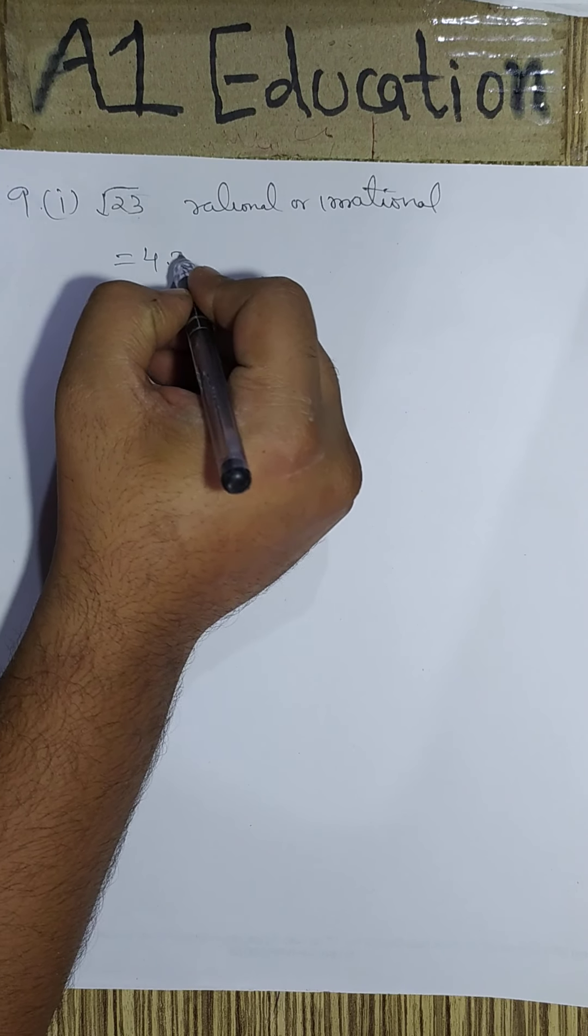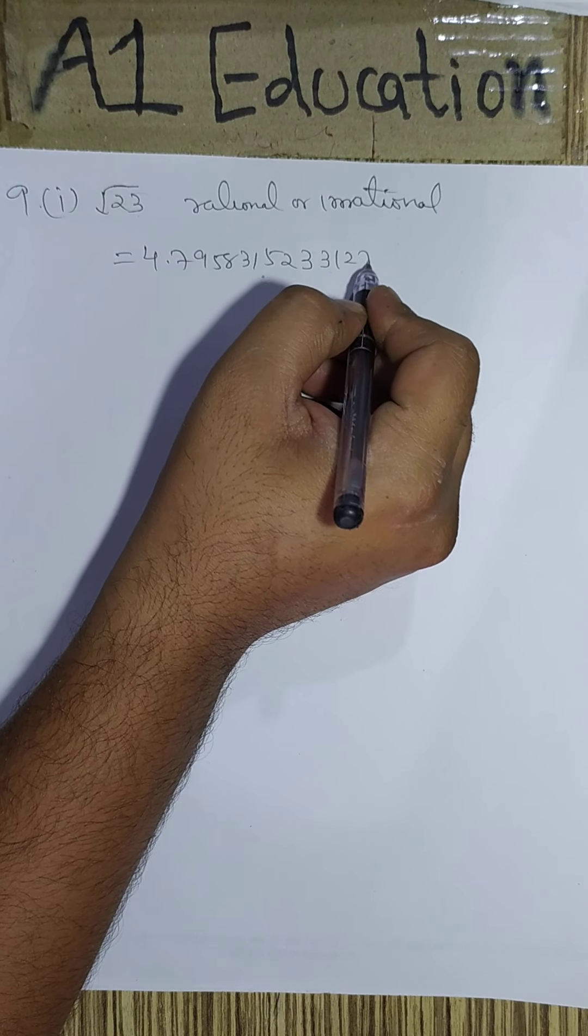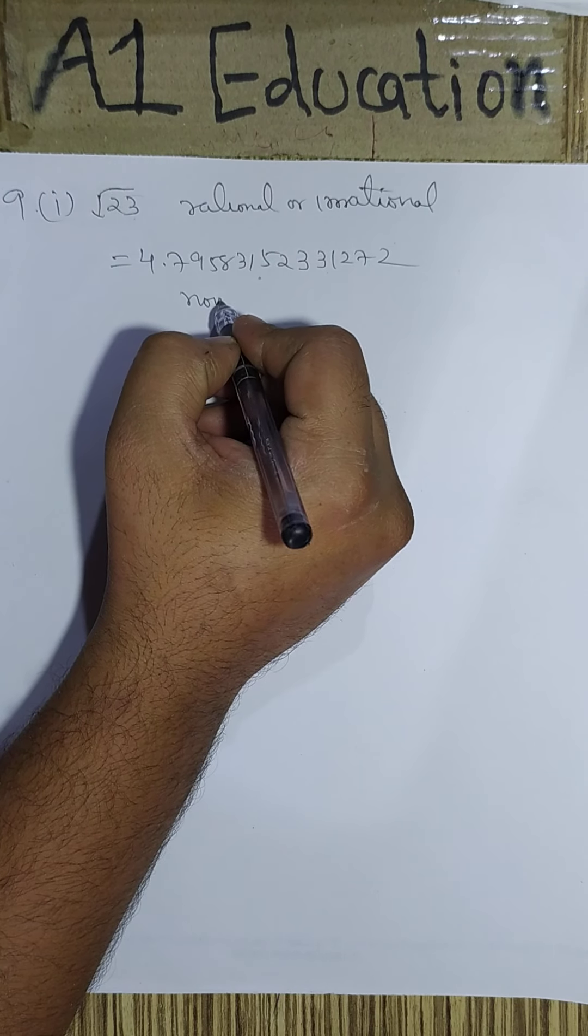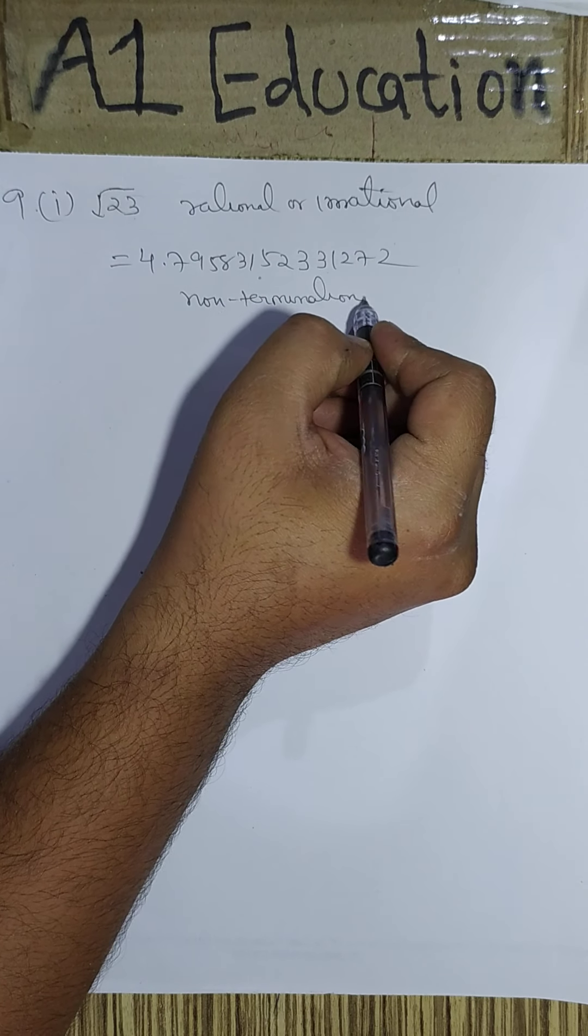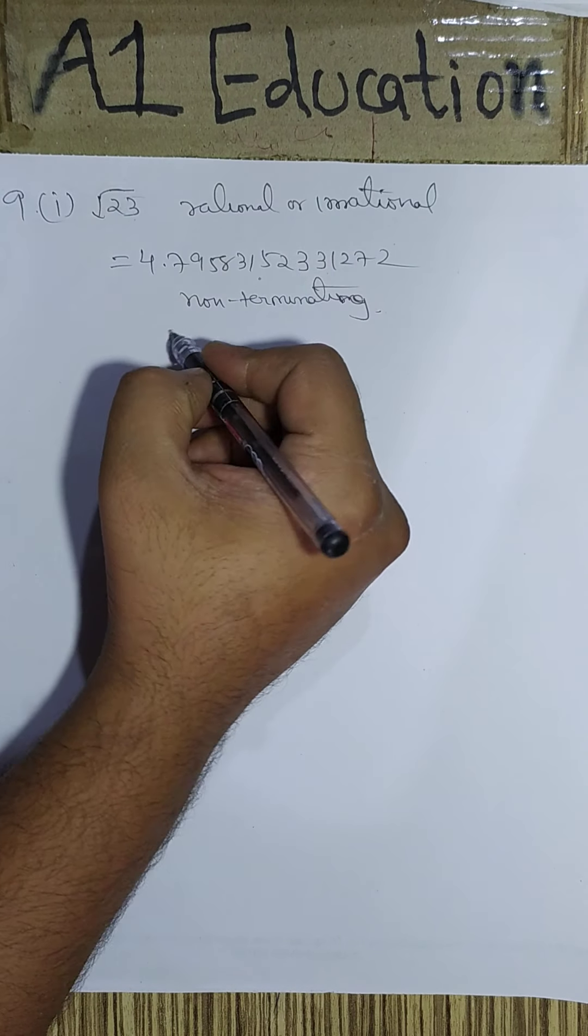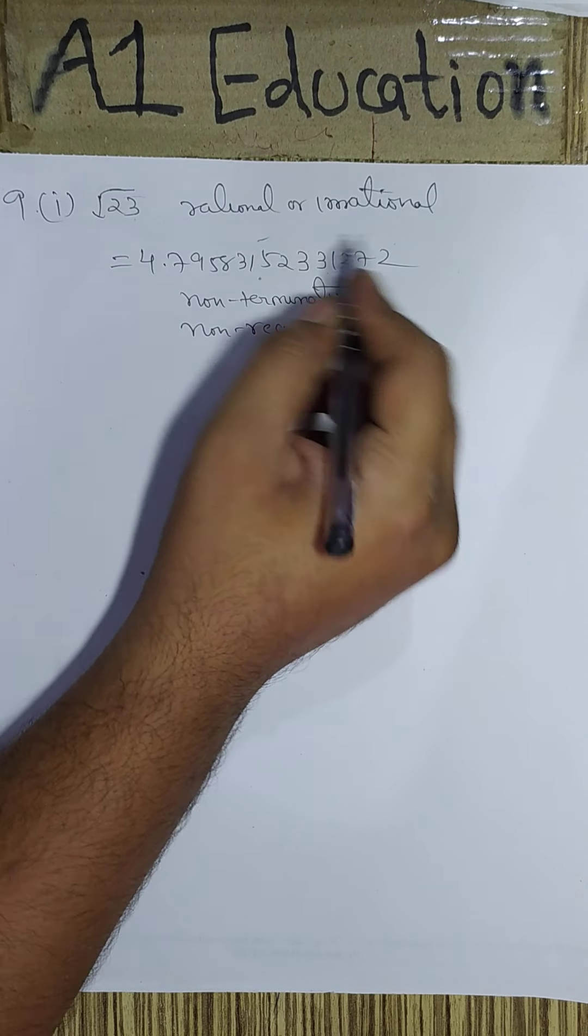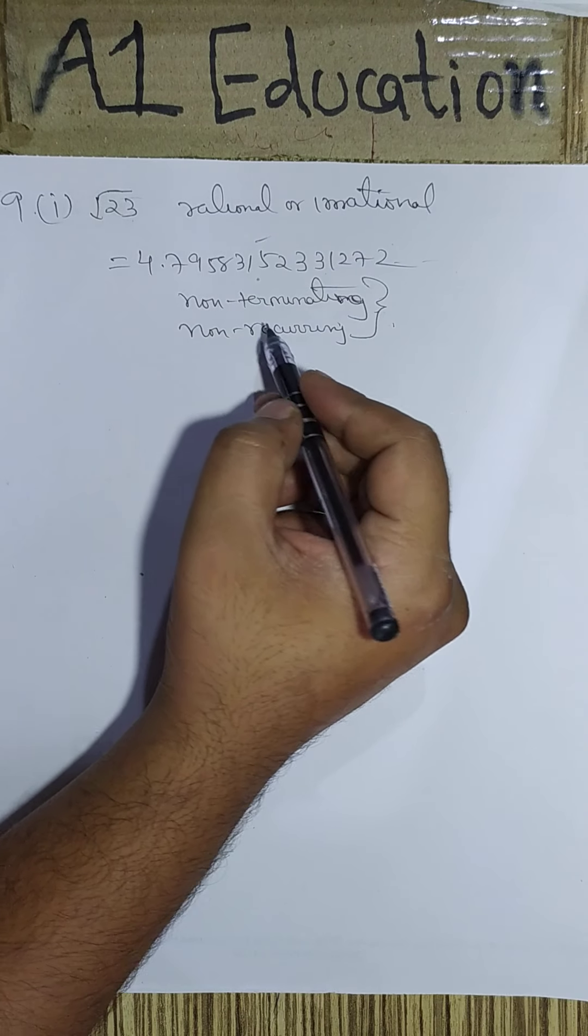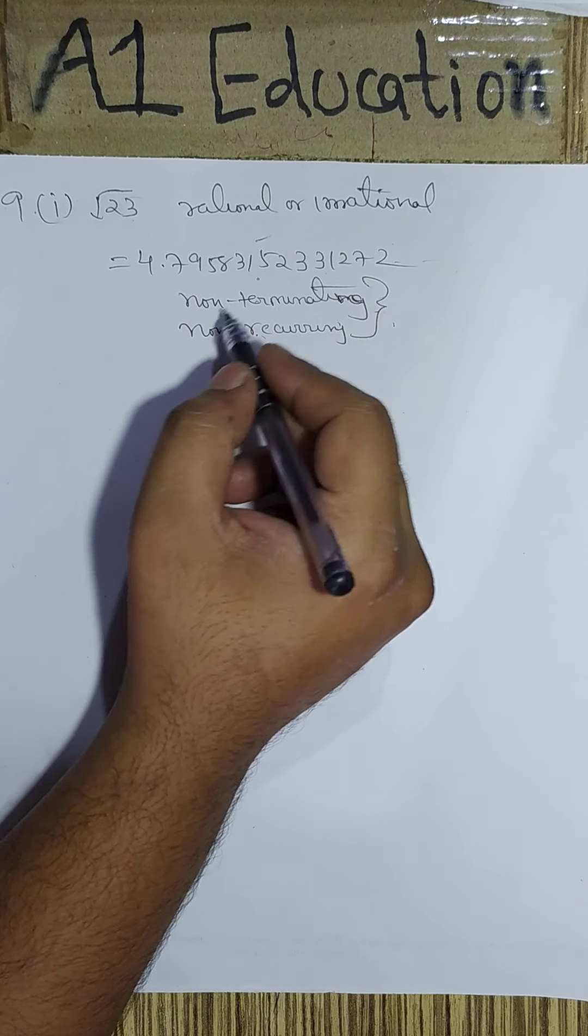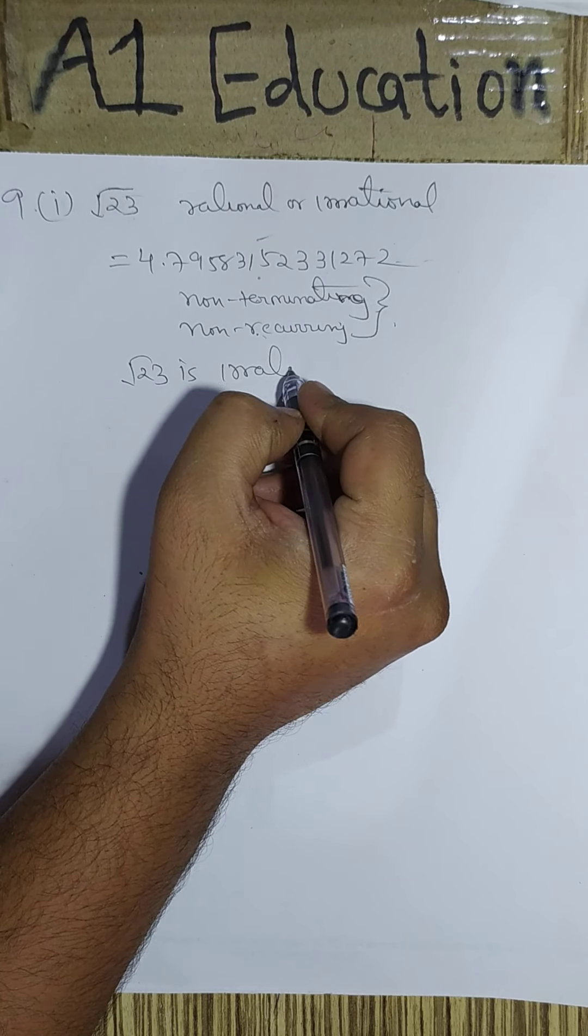It is non-terminating and non-recurring also. No digits are repeating again and again, and also it is not ending. Hence, these both conclusions lead us that the square root of 23 is an irrational number.